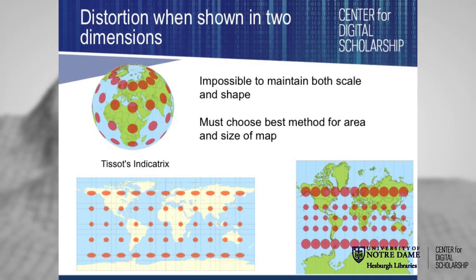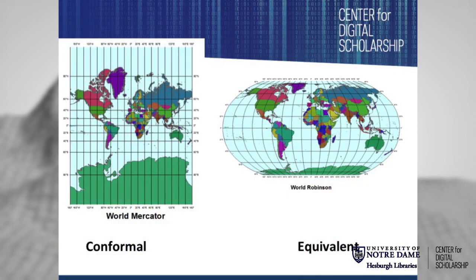You can see an indication of this in what are called Tissot's Indicatrix — essentially circles of a standard size put on a globe. When we flatten the map out in some way, they either get distorted in shape or change in size. This is because we're using a projection — projecting part of the sphere onto a flat plane. We can really only maximize either conformity (shape) or equivalence (size); we have to have a tradeoff between these.